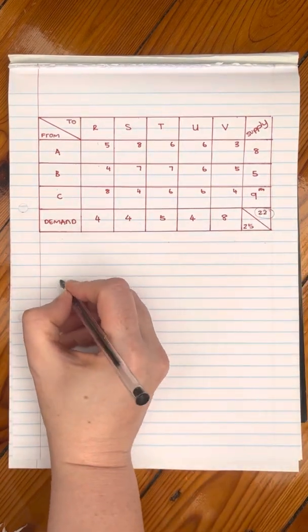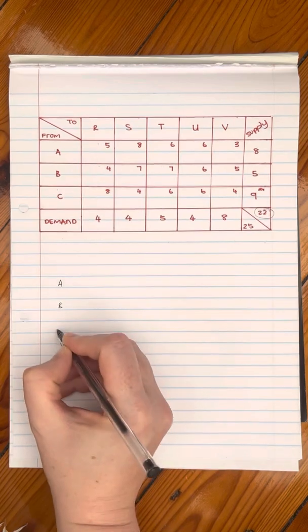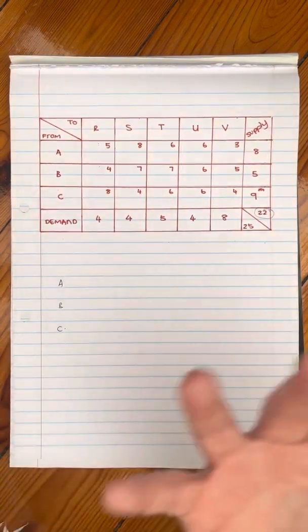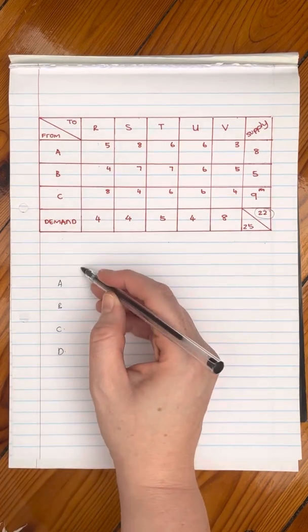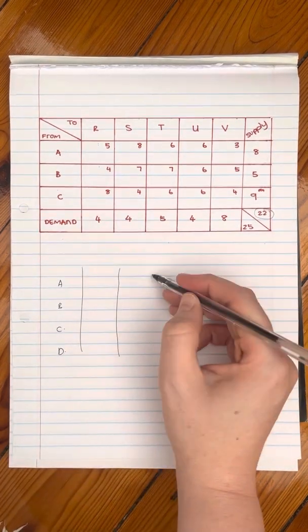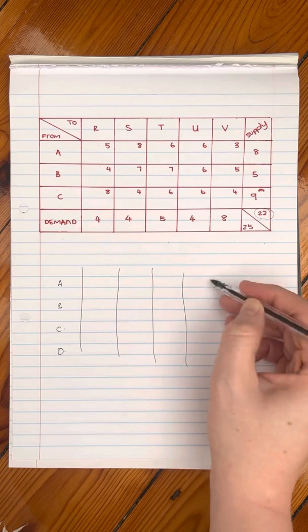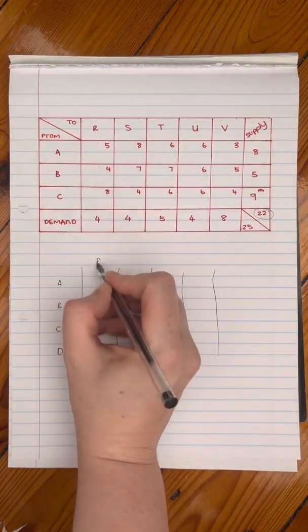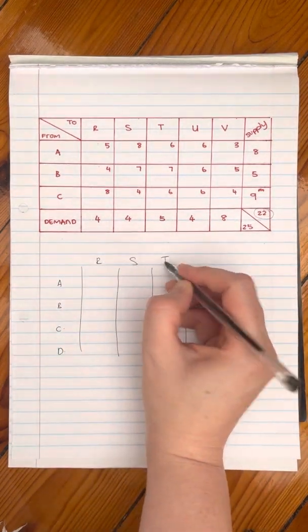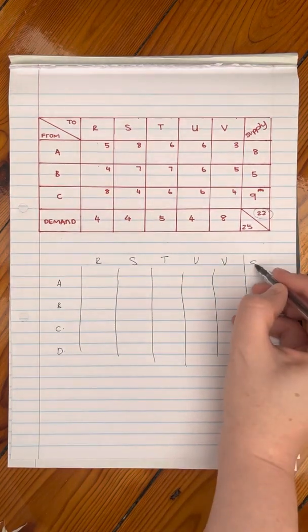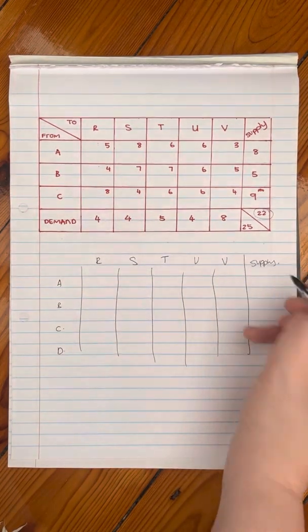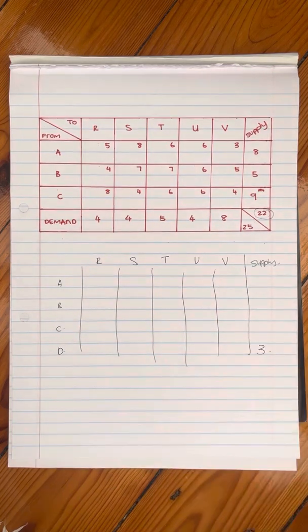So we're still going to have that A, that B, that C, but we're going to create a dummy row of like D. And what we're going to do is we are going to add it in. So let's just draw this super roughly just so you can see how exactly you do it. You have your supply, and you'll have a three in there.